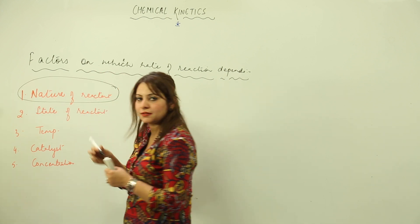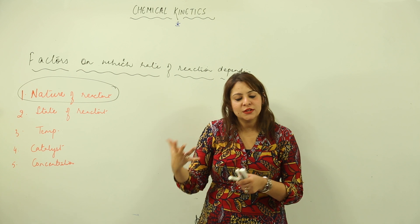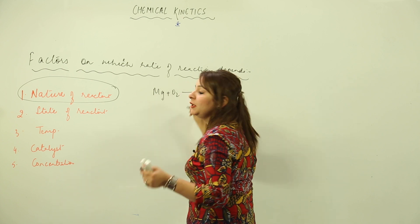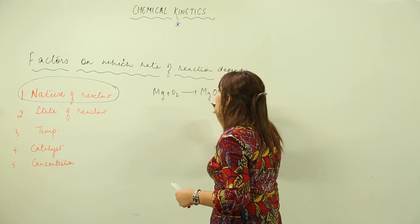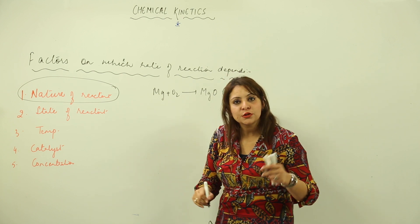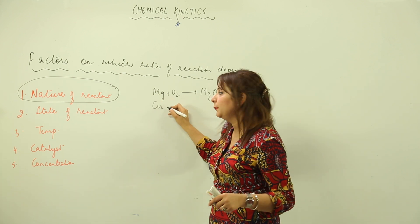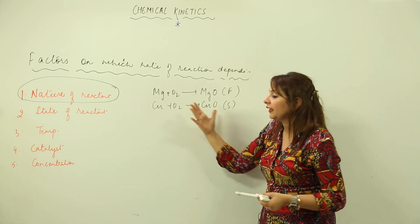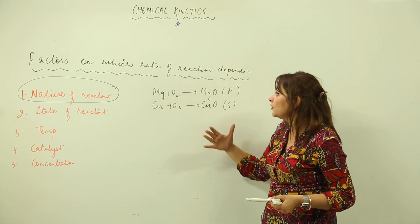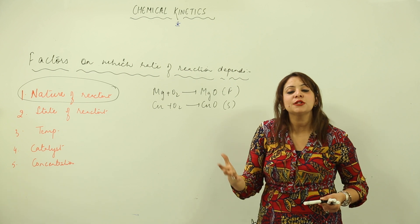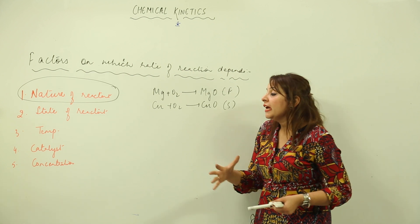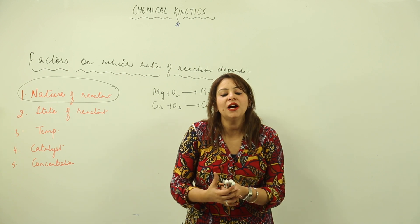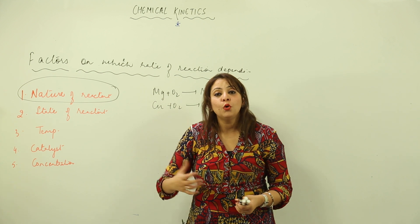The first factor is the nature of the reactant. There are many reactions which occur at a fast rate and many which occur at a slow rate. For example, magnesium plus oxygen — when we burn a magnesium ribbon in oxygen we get magnesium oxide, and that is a fast reaction. Copper is also a metal, but when we burn it, it forms copper oxide, and that is a slow reaction.